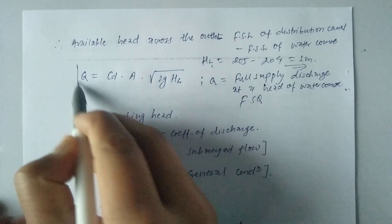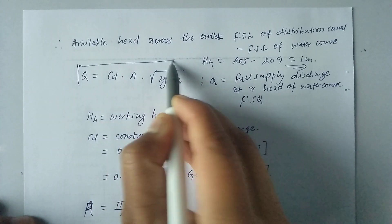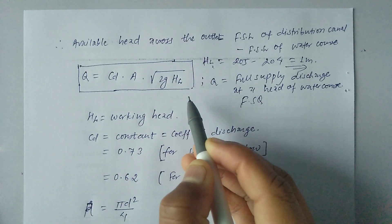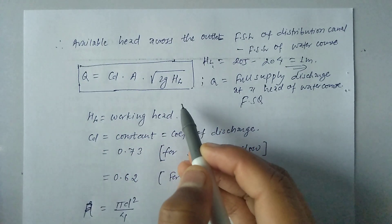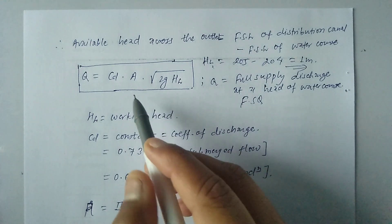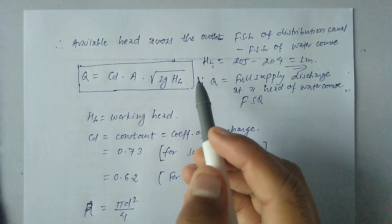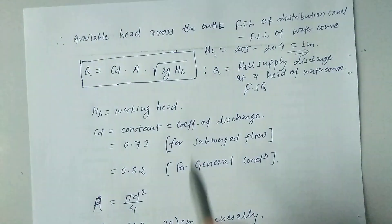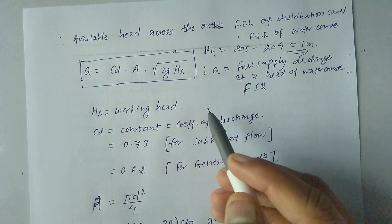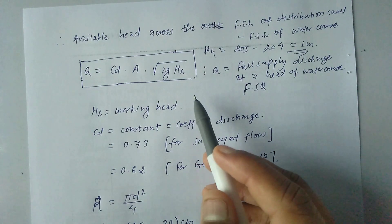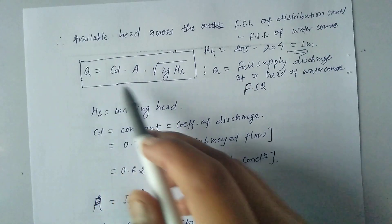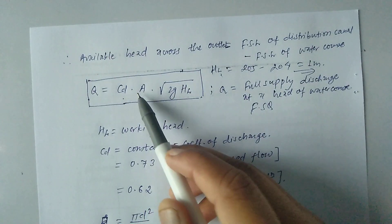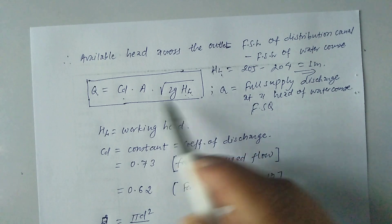Whenever a question says to design a canal outlet, it means we have to design the diameter of the pipe. So the formula Q = Cd · A · √(2g · HL) is used. Now let's see what Cd and A are, and HL I have already explained.